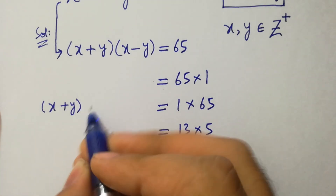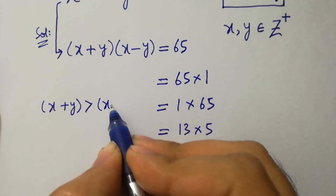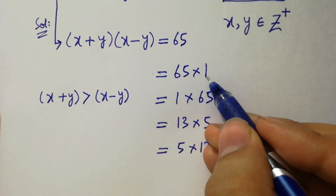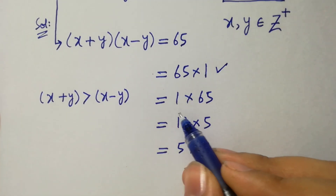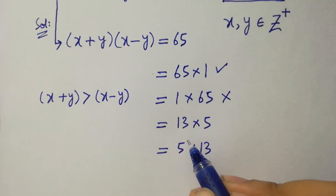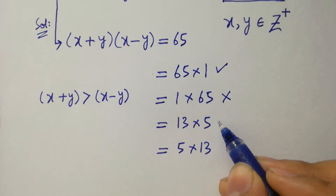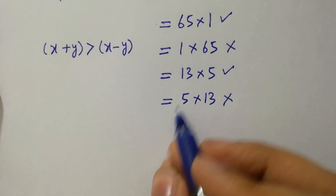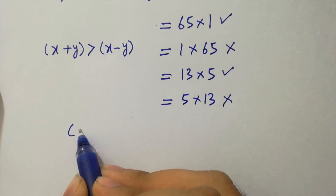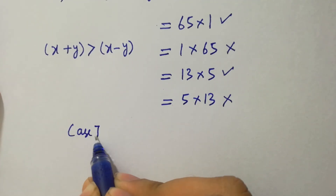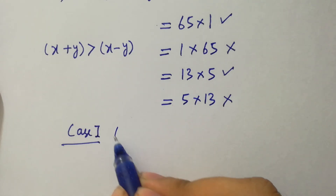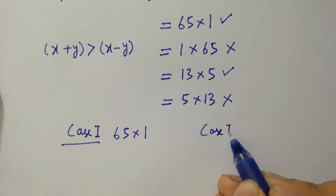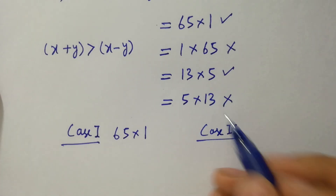x plus y is greater than x minus y. According to that: 65 greater than 1 — possible. 1 less than 65 — not possible. 13 greater than 5 — possible. 5 less than 13 — not possible. So the possible cases are: first case is 65 times 1, and second case is 13 times 5.